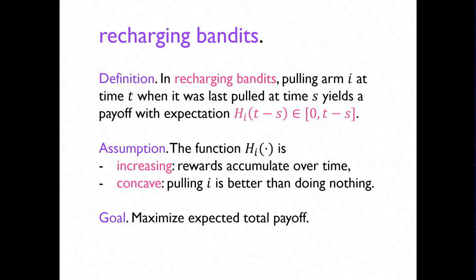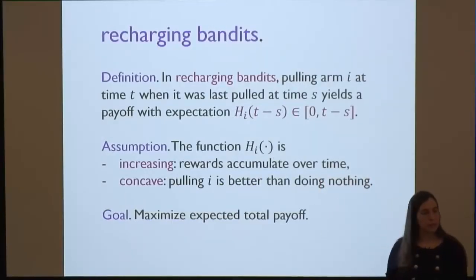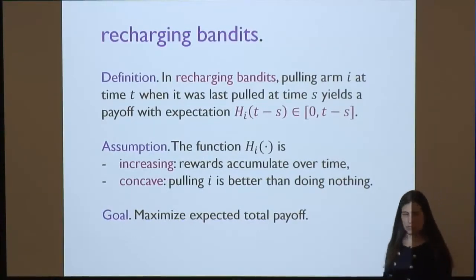In the recharging bandit problem, the reward that you get from pulling an arm is a function of the delay since you last pulled it. There's some function h sub i, which is the expectation of the reward you get if you last pulled it d days ago. We assume this function is increasing — rewards accumulate over time — and that it's concave, which means that inserting a pull in an idle time step improves your payoff. So if I have a delay of 10 days between two pulls, I could insert a pull in between, giving two five-day delays, which is better than one 10-day delay.